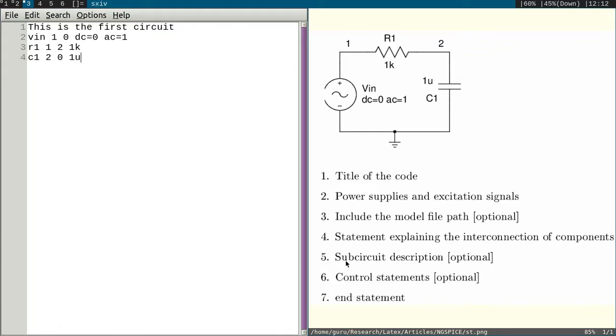Now, next one is subcircuit description. Here we are not using any subcircuit, so we don't need this part. Next one is the control statement. We will write what are the analysis or operation you would like to perform in this block. We will write dot control. It should start with this statement dot control and it should end with dot endc. In between we can add any analysis or operation you would like to perform, any plotting or saving, anything you have to put within this. In this we would like to perform frequency response. We would like to analyze the frequency response, so I have to perform AC sweep.